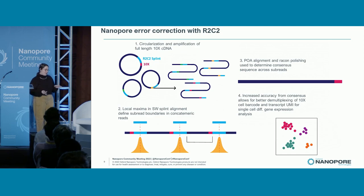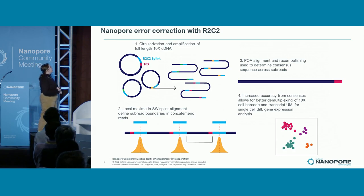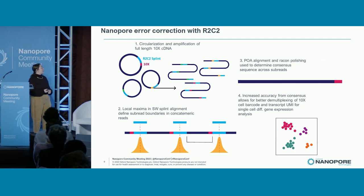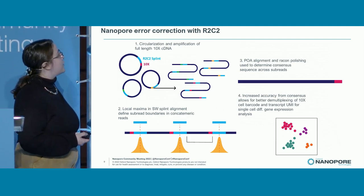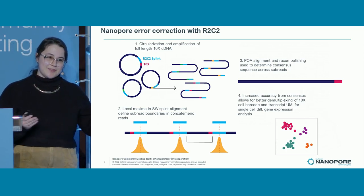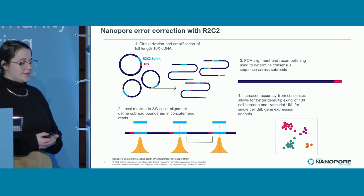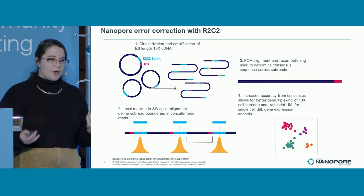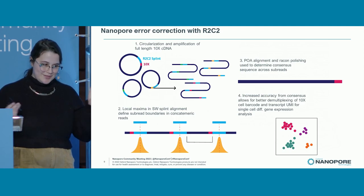This was before all the fancy new Q20 chemistry — single-cell isoform sequencing before it was cool — and you had to deal with error rates inherent to nanopore base calling at the time. One in every 15 base pairs being erroneously called might not seem like a big deal, but when your entire experiment is contingent on reading out a 16-base pair barcode, even small error rates become a big problem. So we adopted R2C2, developed by Roger Volden and Chris Vollmer's lab at UCSC — a nanopore error correction library prep that circularizes all the cDNA to generate long concatemeric molecules with sequence repeats, which are collapsed into a consensus read far more accurate than raw nanopore, enabling barcode demultiplexing and assignment back to cells of origin.